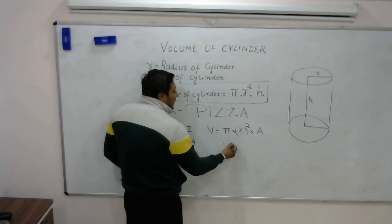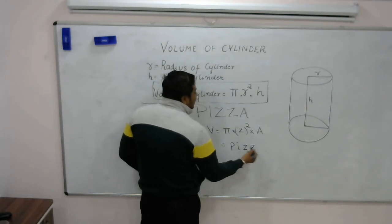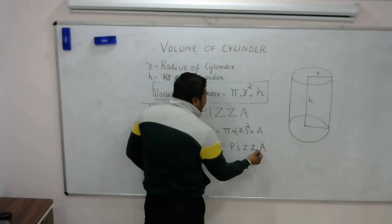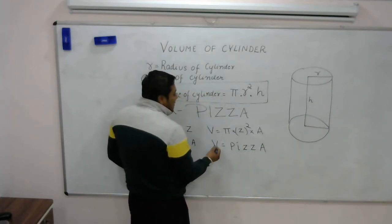If I write pi as P-I, and open this Z squared as Z-Z, and write A as A, it becomes P-I-Z-Z-A.